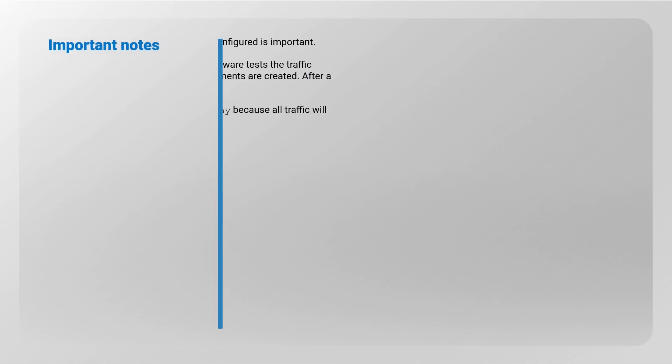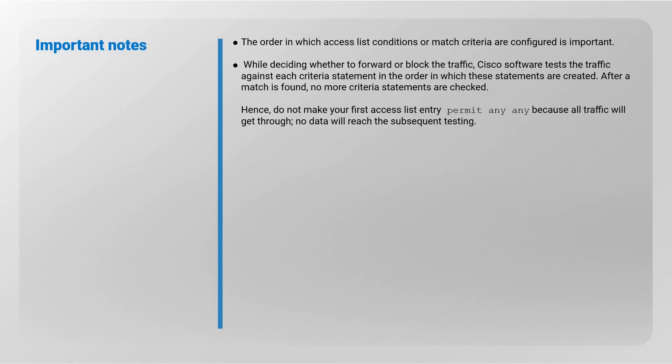The order in which access list conditions or match criteria are configured is important. While deciding whether to forward or block traffic, Cisco software tests the traffic against each criteria statement in the order in which they were created. After a match is found, no more criteria statements are checked. Hence, do not make your first access list entry 'permit any any,' because all traffic will get through and no data will reach the subsequent testing.